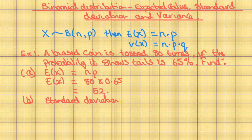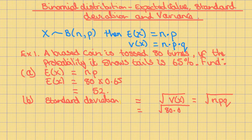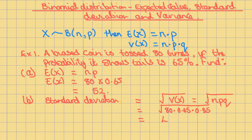B, the standard deviation. The standard deviation is equal to the square root of the variance of X, which is equal to the square root of NPQ. In this case, N is 80, P is 0.65, and Q is 1 minus 0.65, which is 0.35. This gives a standard deviation equal to 4.27 to 3 significant figures.